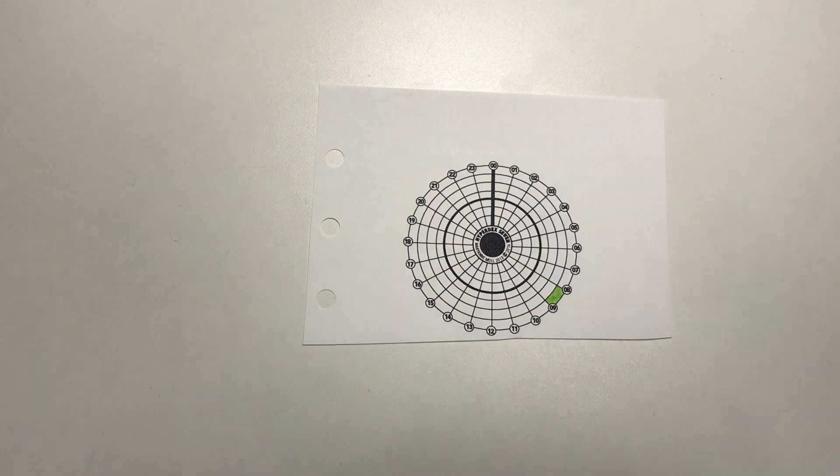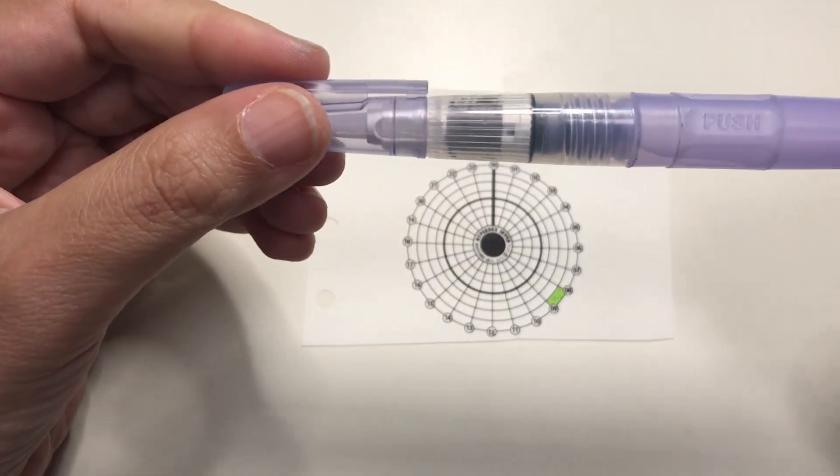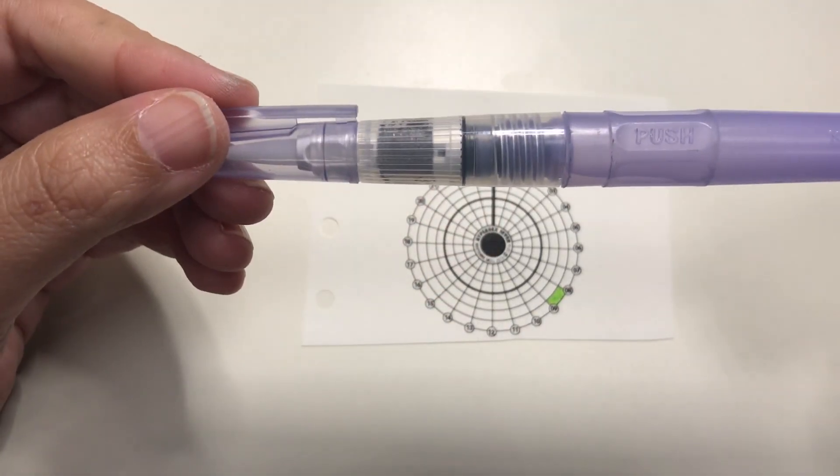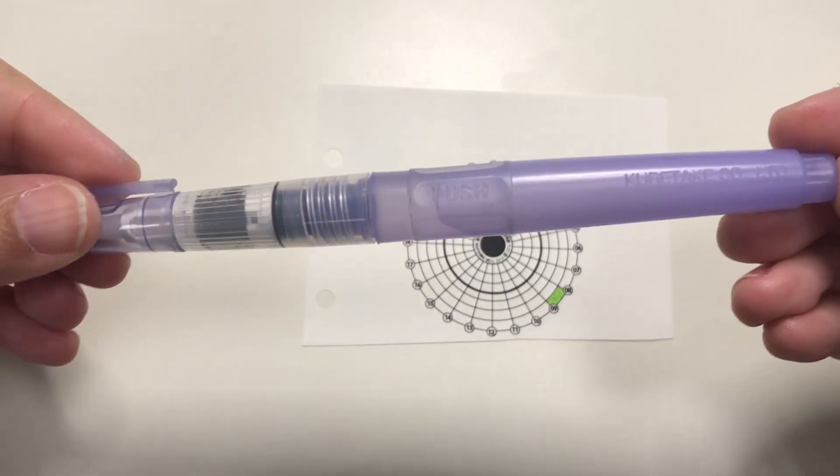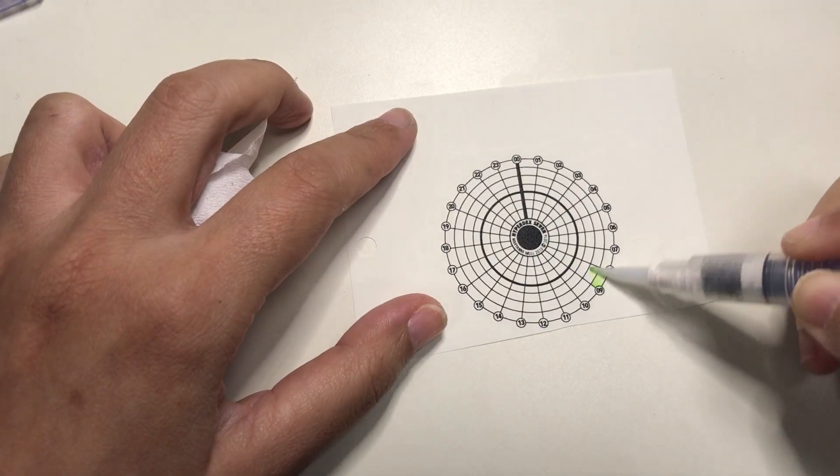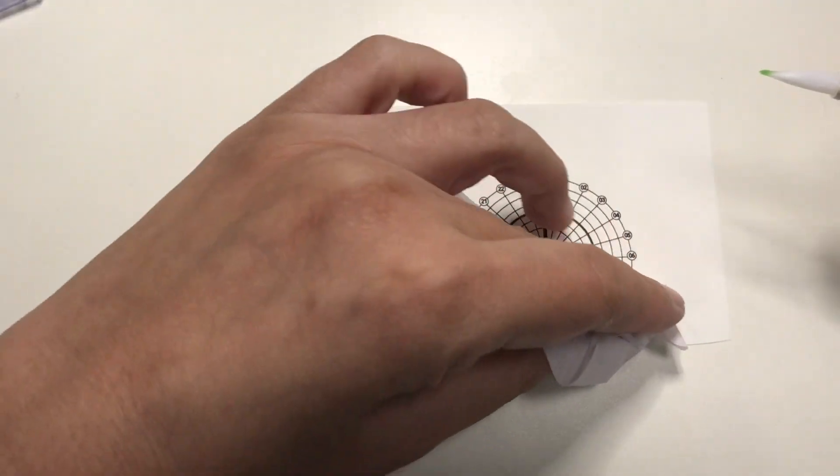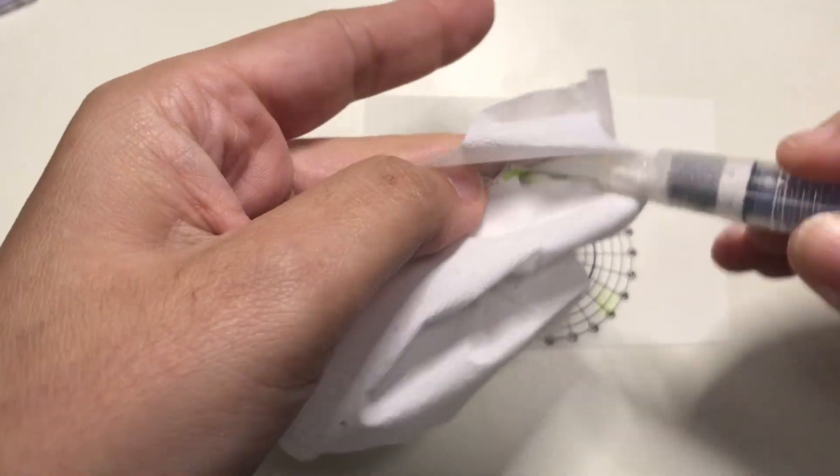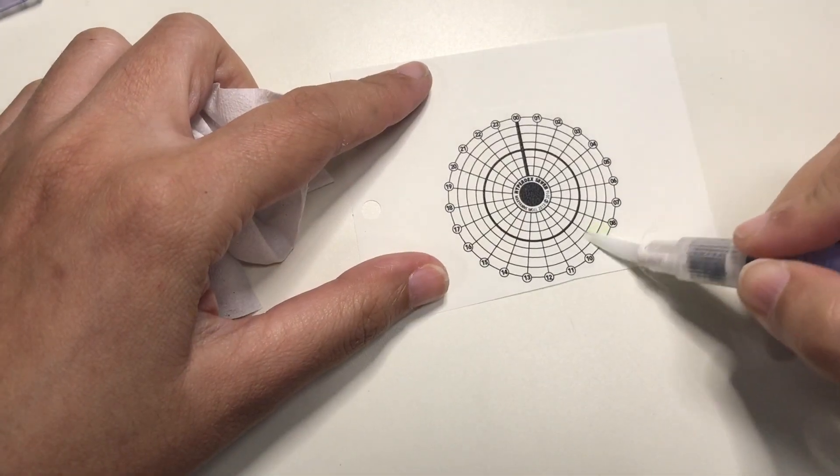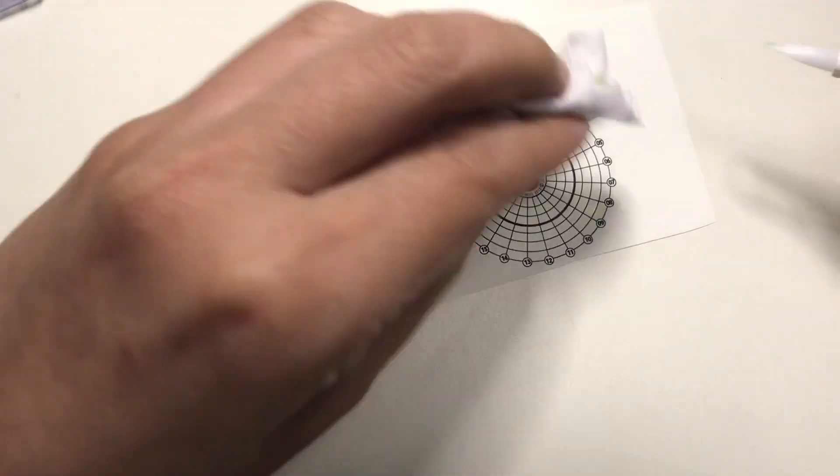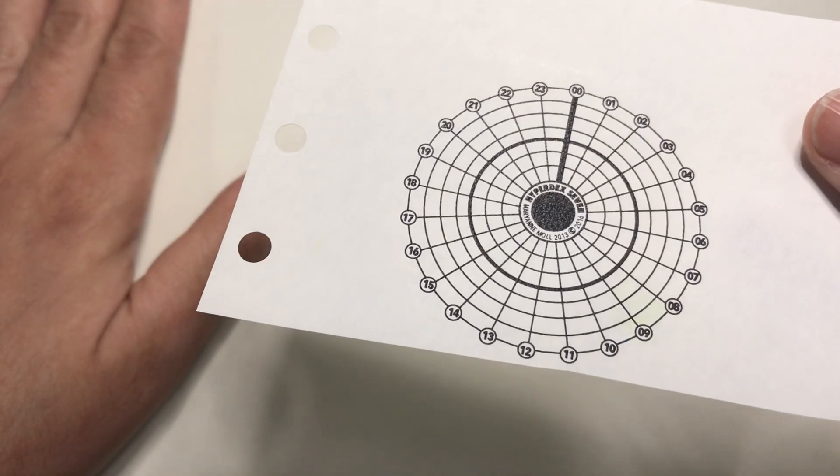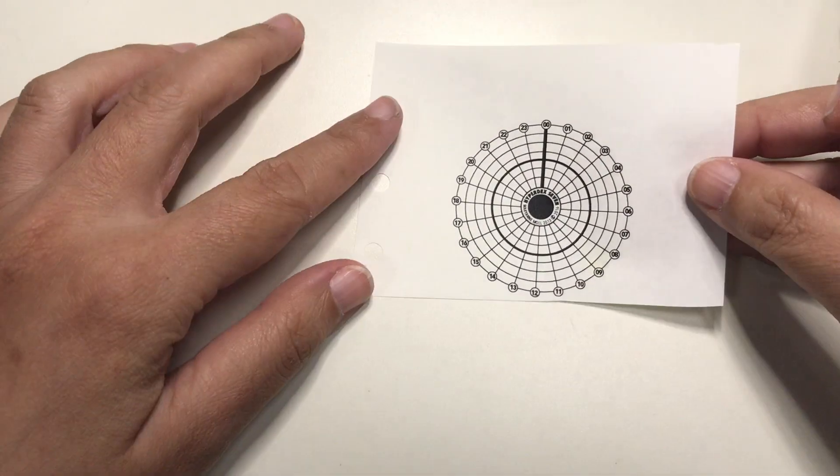I just take my water brush, this one right here, and this is also from Kuretake, same as the brush pen, and I just scribble the brush over the light green, alternately dabbing the paper and the brush with a piece of tissue as I go along. As you can see, the color is gone now.